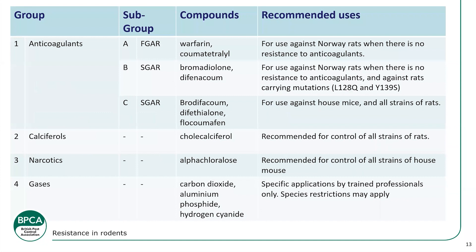There's a fairly new information resource that's been popping up over the last 18 months. It lists the anticoagulants in subgroups: first-generation anticoagulants, second-generation multi-feeds, and second-generation single feeds. FGAs are for use against Norway rats with no resistance to anticoagulants. Multi-feeds — bromadiolone and difenacoum — are for Norway rats with no resistance and also against strains L128Q and L139S. Single feeds are for use against all house mice and all strains of rats. Also recommended for all strains: calciferol, and narcotics such as alpha-chloralose for all strains of house mice.